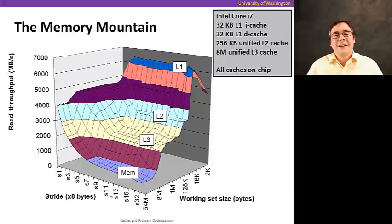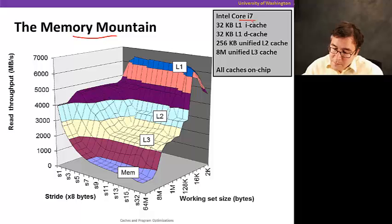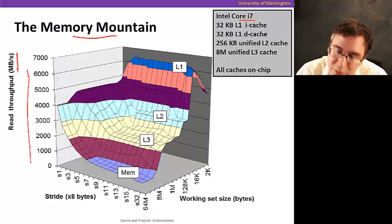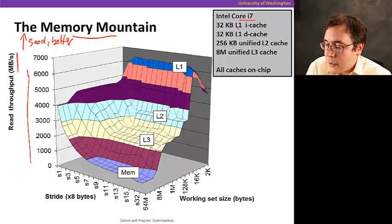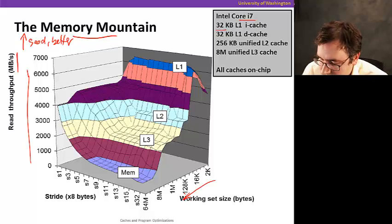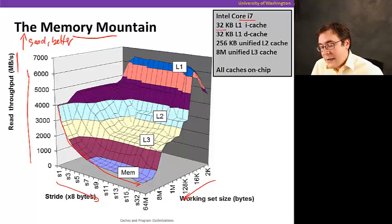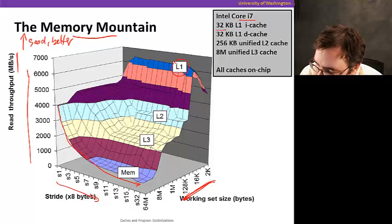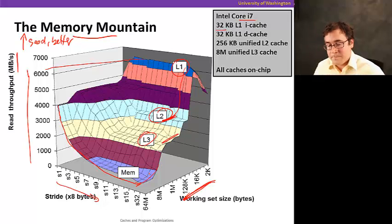Let's end our memory and cache section with the memory mountain — this is very cool. We ran experiments on an Intel Core i7. The y-axis shows read throughput in megabytes per second — up is better. The x-axis shows stride size growing one way, and working set size growing the other. As you increase stride size, there's a general drop in read throughput because you're not taking advantage of spatial locality. If the working set fits in L1 cache, you get very high throughput; then there are plateaus for L2, L3, and finally main memory.